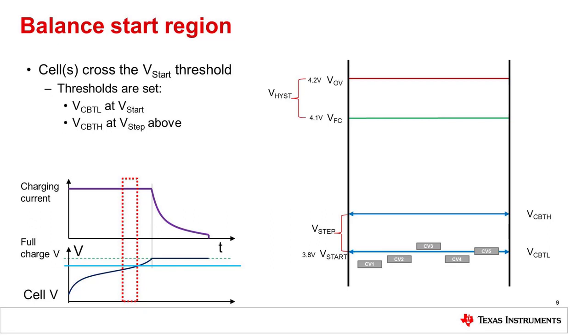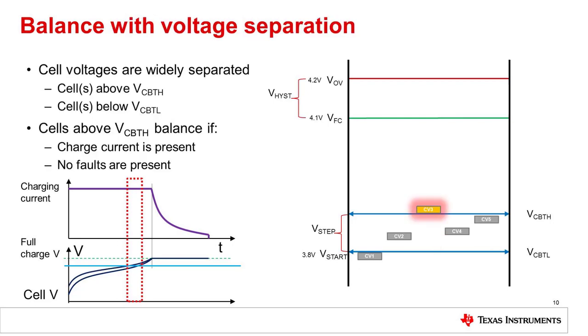As cell voltages rise through the start threshold, high and low thresholds are set by the device, separated by the voltage specified in the V-step setting. As cell voltages cross the lower threshold, the device does not start balancing. When the cells are separated enough so that one or more cells is below the lower cell balance threshold and one or more cells is above the upper threshold, the cells above the upper threshold will balance. In this illustration, cell 3 will start to balance.